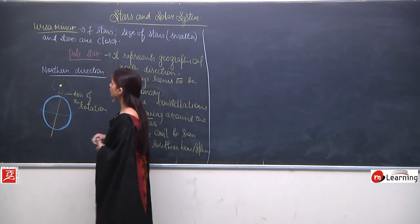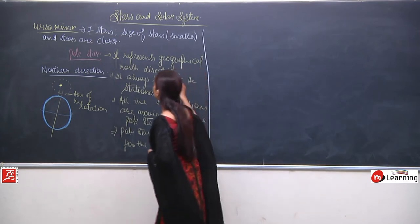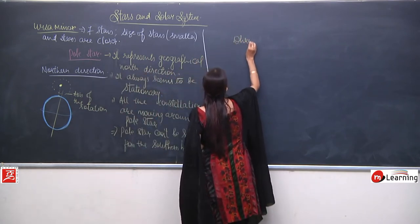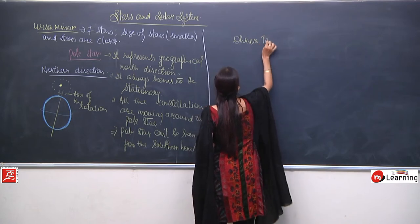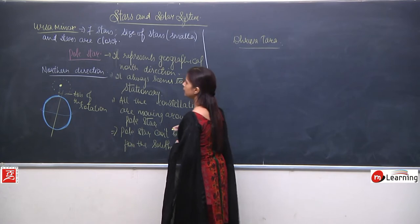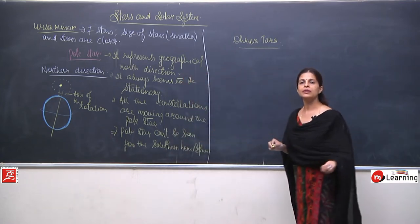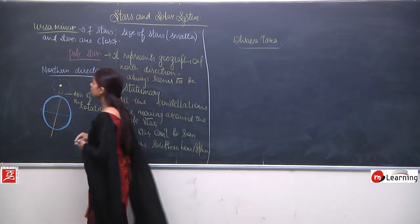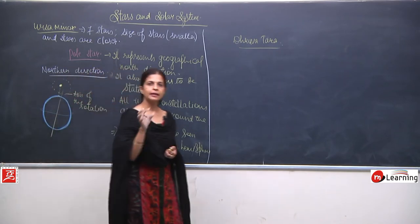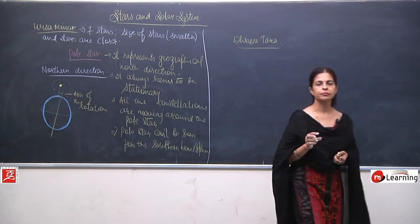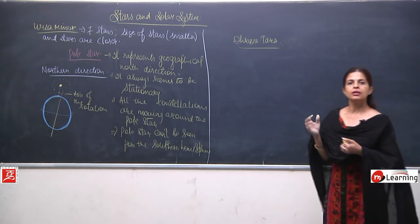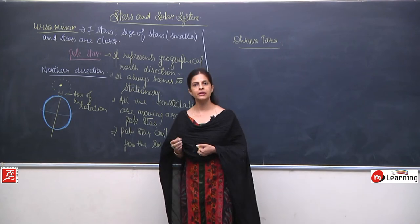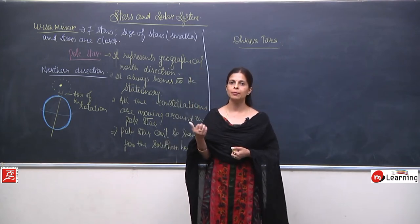The pole star is known as Dhruvthara in Hindi. The importance of the pole star is that as its position is stationary, it represents the geographical north and does not move. So sailors in the olden days used to recognize directions with the help of the pole star — they used to judge that because of the pole star, this direction is north.